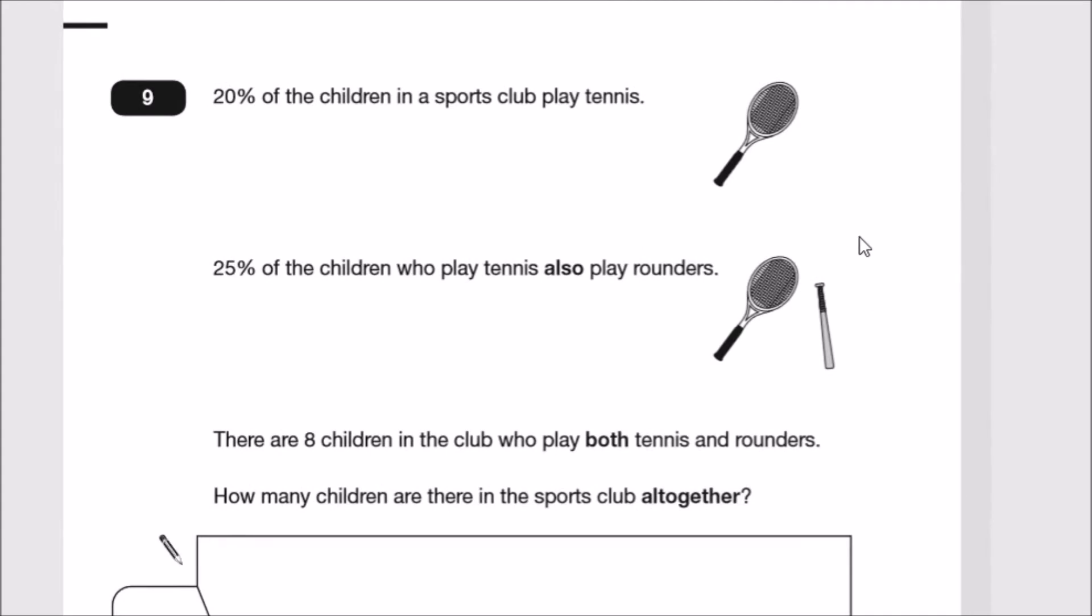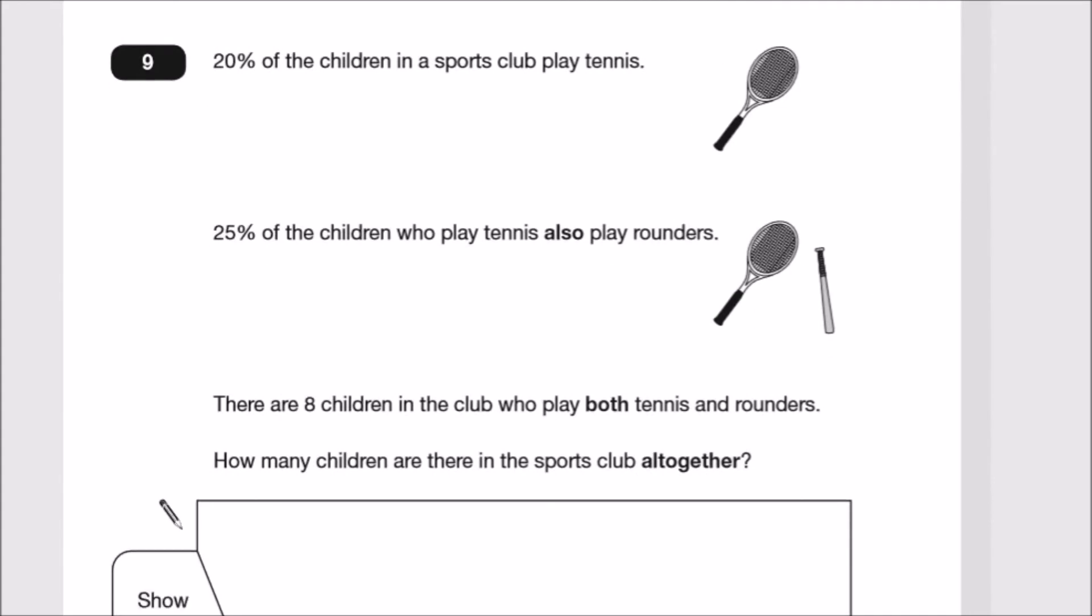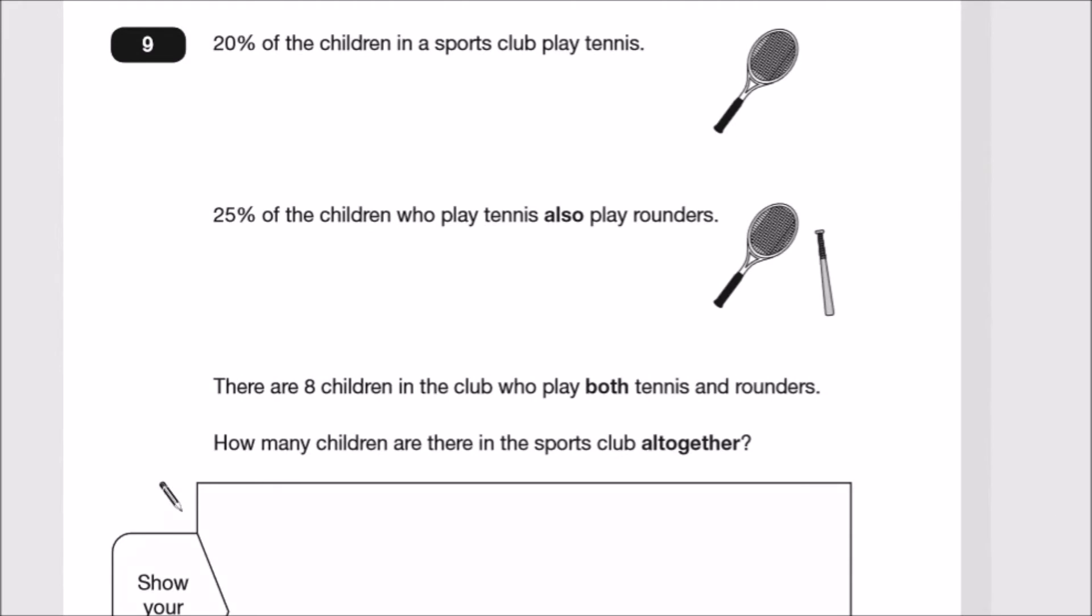Number nine: This one's very articulate, so be careful. Let's do this. 90 of the children in the sports club play tennis. 25 of the children who play tennis—basically out of 25—20 also play rounders.